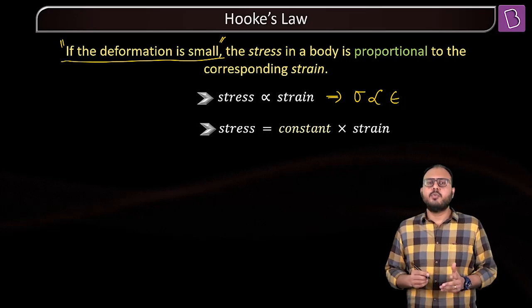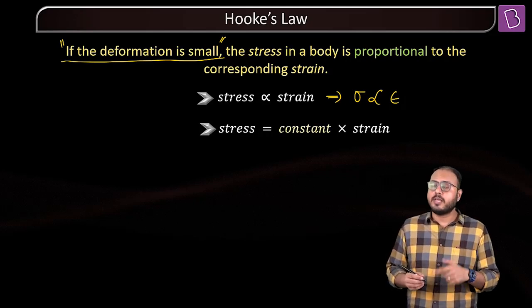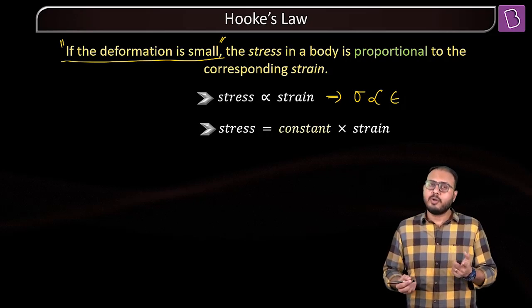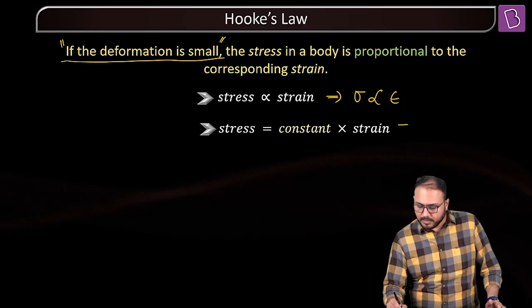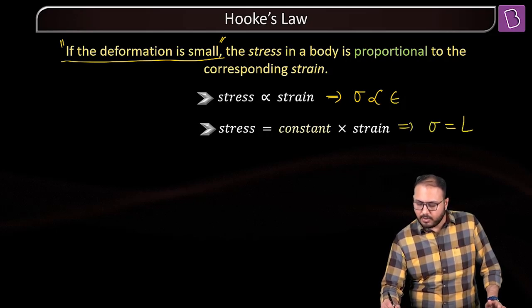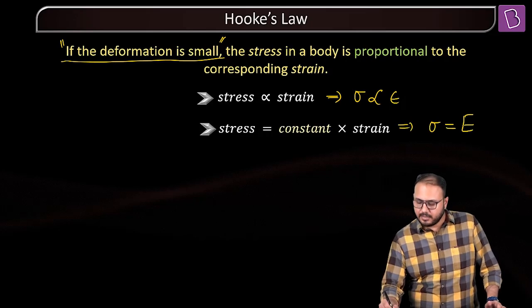Of course, when you convert a proportionality into an equality, what do you do? You have to add a constant. That implies sigma is equal to some constant — capital E — times epsilon.